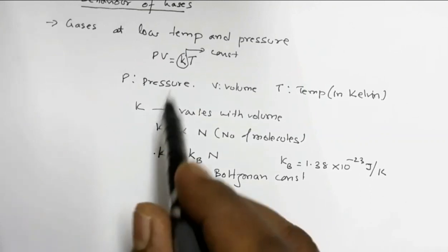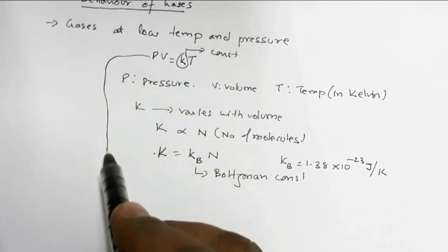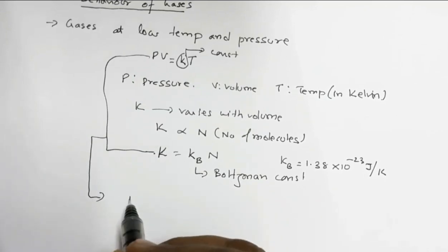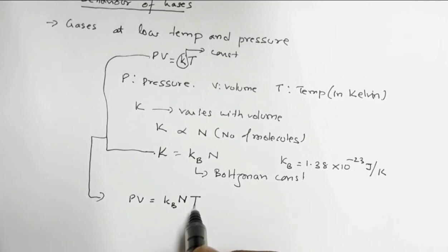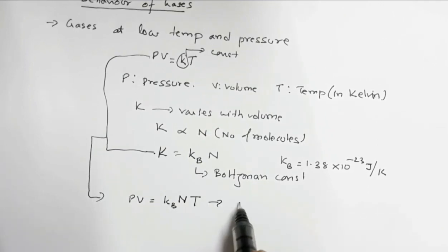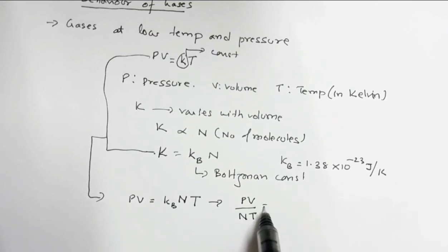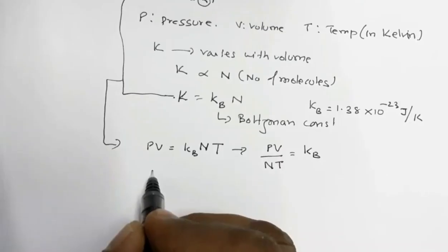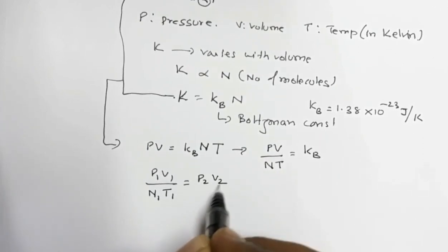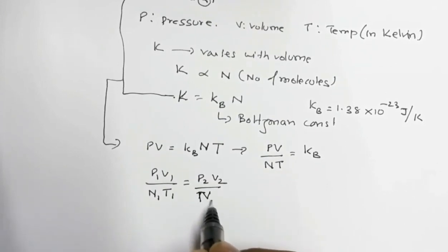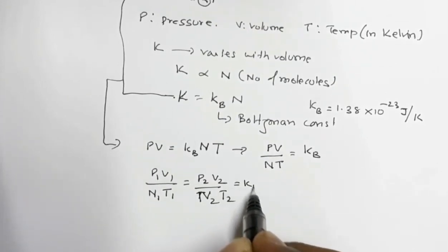Substituting this value of K into PV = KT, I get PV = K_B × N × T. This implies PV / (N × T) = K_B, the Boltzmann constant. So at two states 1 and 2: P₁V₁ / (N₁T₁) = P₂V₂ / (N₂T₂) = K_B.